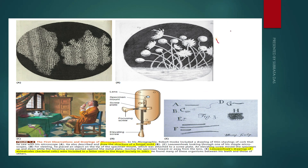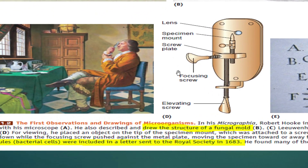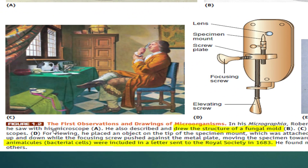To summarize the discovery: dead cells were first observed by Robert Hooke, and then the microscope was invented by Anton van Leeuwenhoek. His simple microscope had a lens, a specimen placement area, and an adjusting screw. He termed the bacterial cell as 'animalcules' in a letter sent to the Royal Society in 1683.